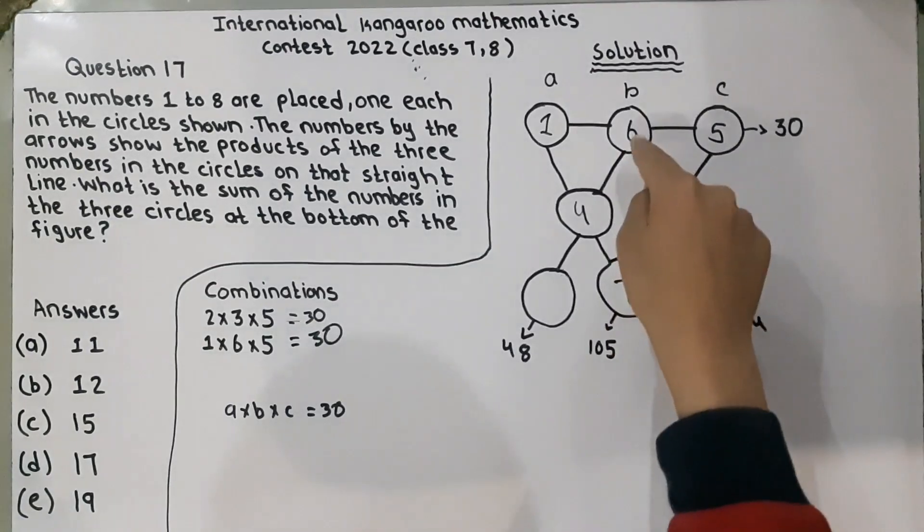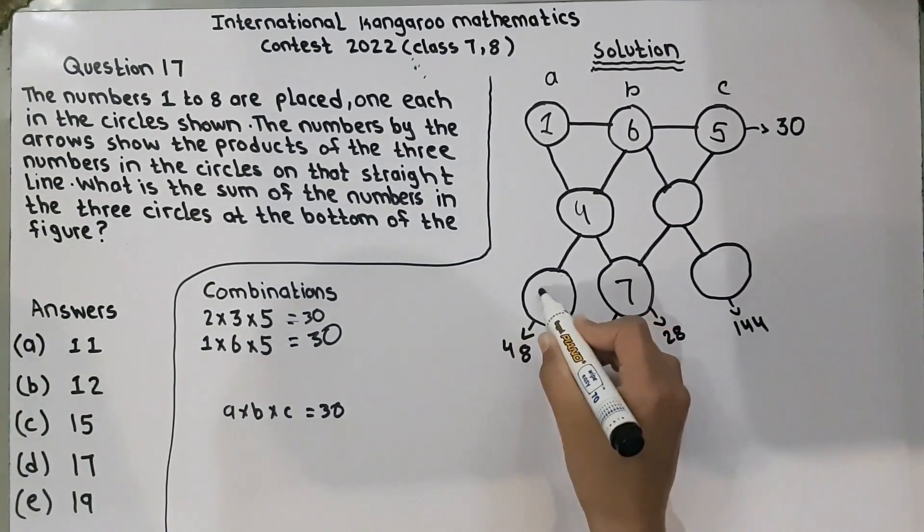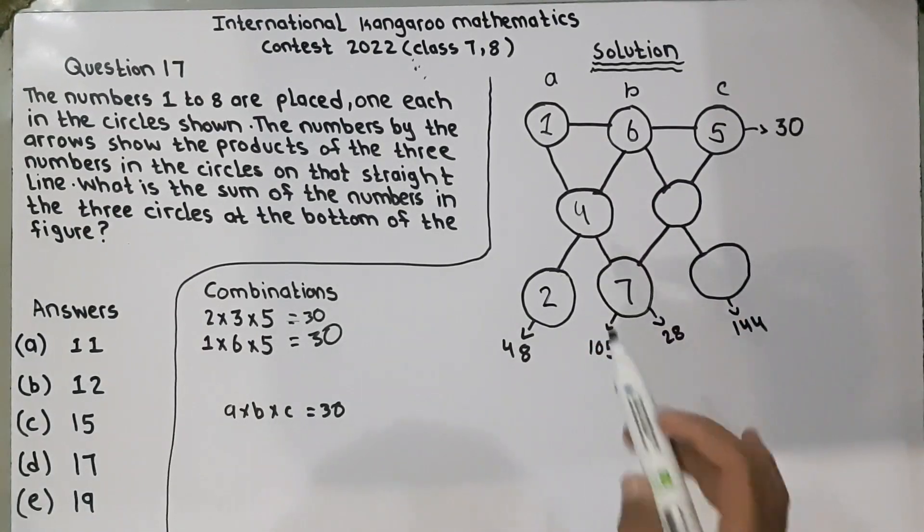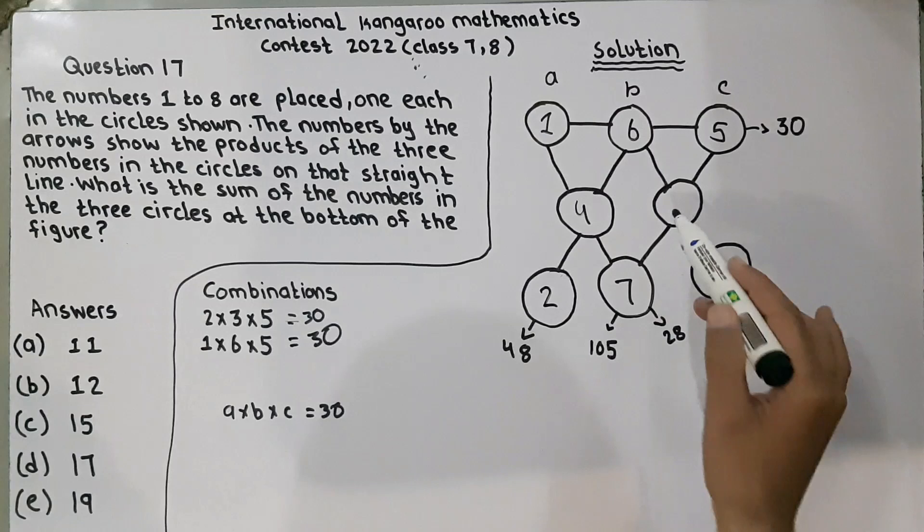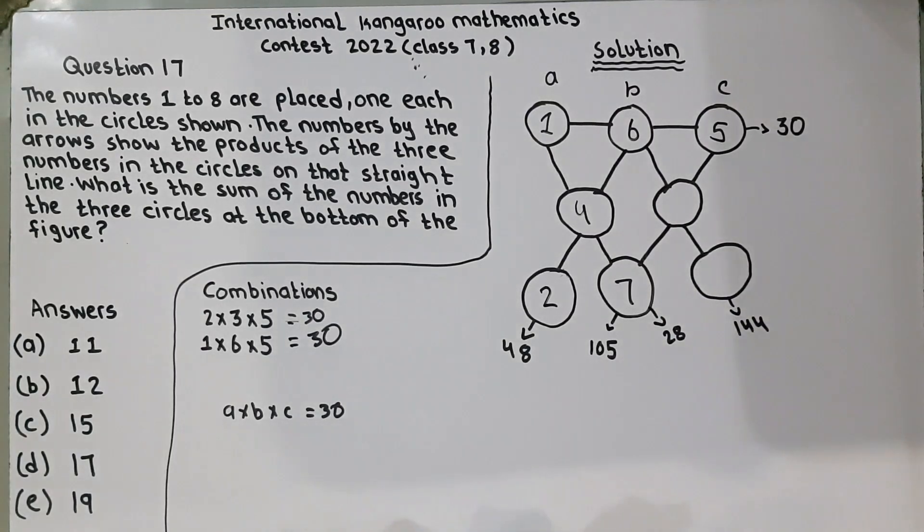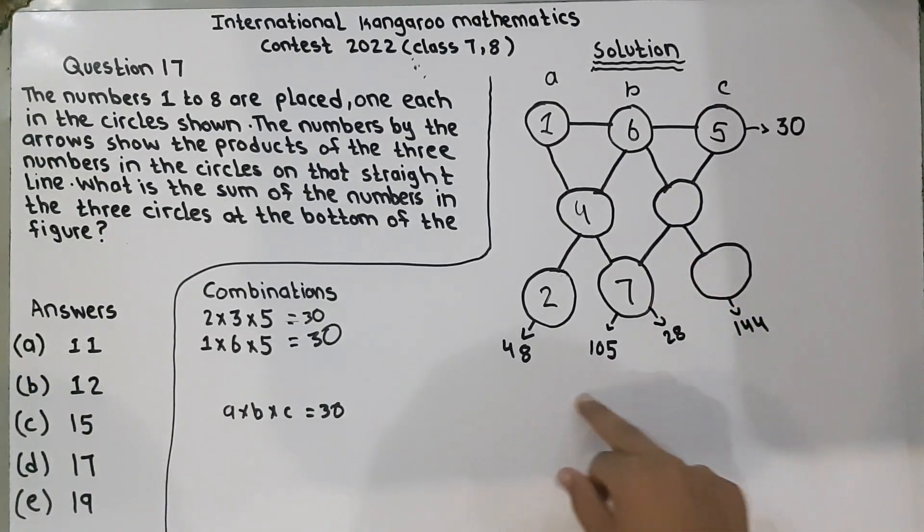And, 6 multiplied by 4 is 24, and 24 multiplied by 2 is equal to 48. So, we have to find 2 numbers and now the leftover numbers are 2, 3, and 8. If we put 8 here, 5 multiplied by 8 is 40, so it will go above this.